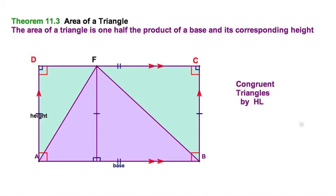And we know that because that would be a case of hypotenuse leg. Both right triangles, notice the matching tick marks there, and they both have the same hypotenuse.